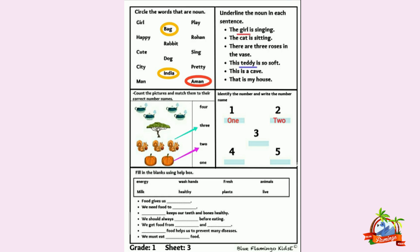Repeat with me. 1 — O-N-E — one. 2 — T-W-O — two. 3 — T-H-R-E-E — three.